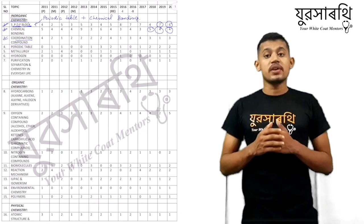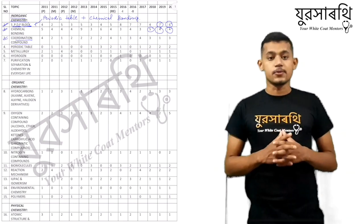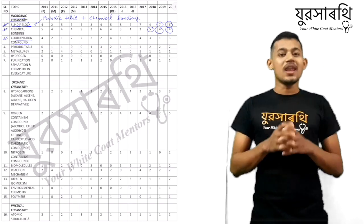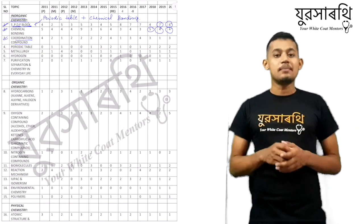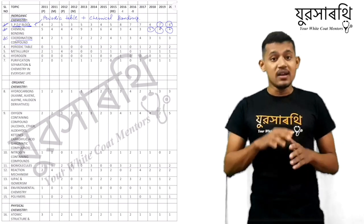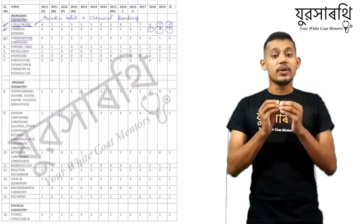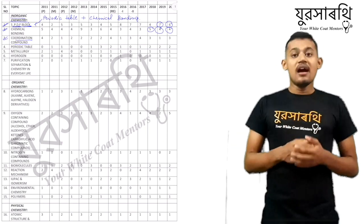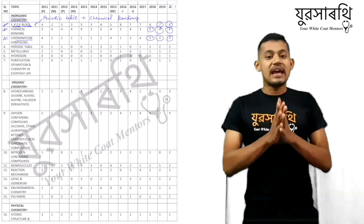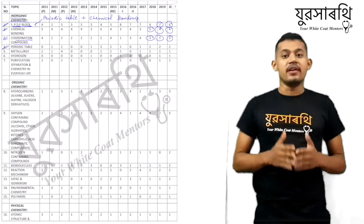Next on the list we have coordinate compounds, which is a class 12 topic. Coordinate compounds involve all the elements of S, P, D, and F block coordinating with each other to gain stability. From the coordinate compounds chapter, they ask around two to three questions each year.